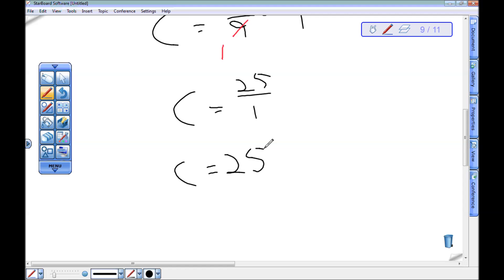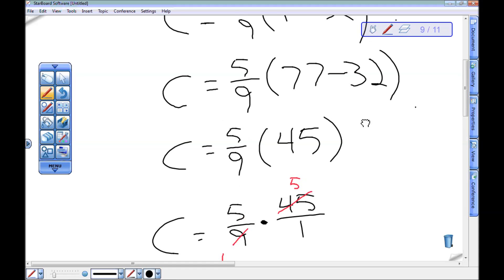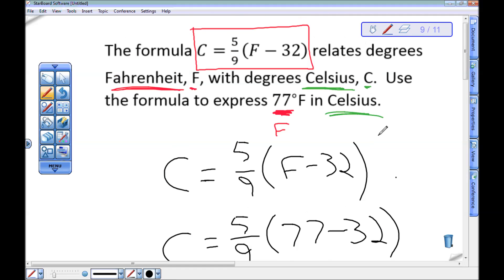All right. Now let's see, what did I actually just do? I found that 25 was what I get when I take this formula and put 77 in there for F.